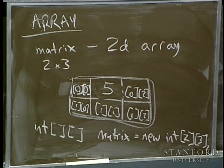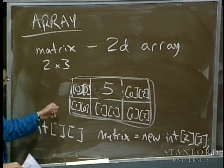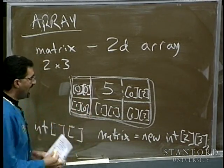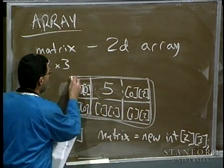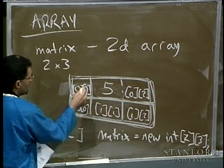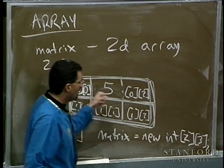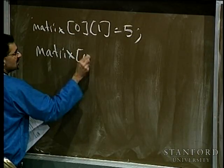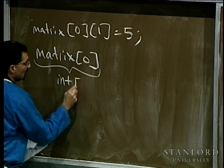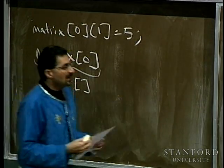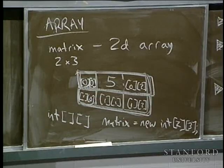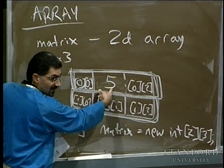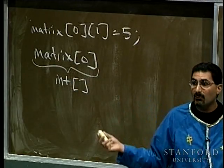A two-dimensional array is really an array of arrays. Think of it as an array with two entries, where each entry is itself an array with three elements. So you can say 'matrix[0]' — the type of that is an integer array, a single-dimensional array. That's referring to the whole first row. If you specify a column index too, that's how you get a specific element. First you specify the row, then the column.